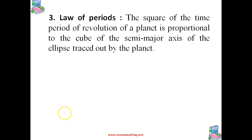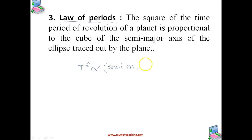Coming to the third law: the third law of Kepler is the Law of Periods. The square of the time period of revolution of a planet is proportional to the cube of the semi-major axis of the ellipse traced out by the planet. The time period is the time taken by the planet for one revolution, and T² is proportional to a³, the cube of the semi-major axis of the ellipse traced by the planet.